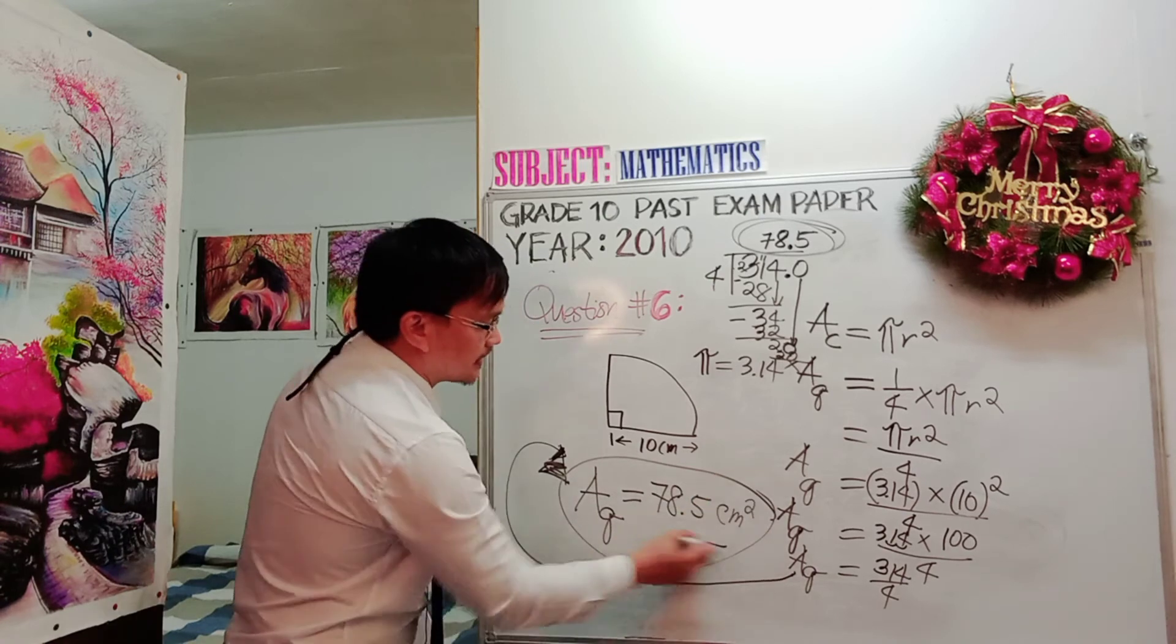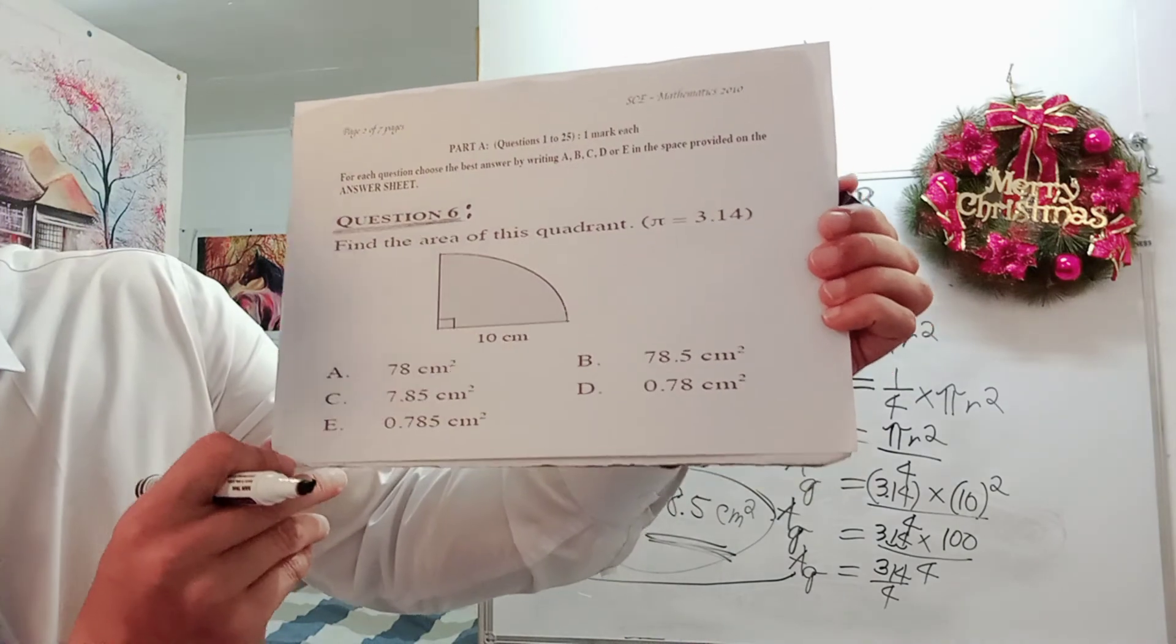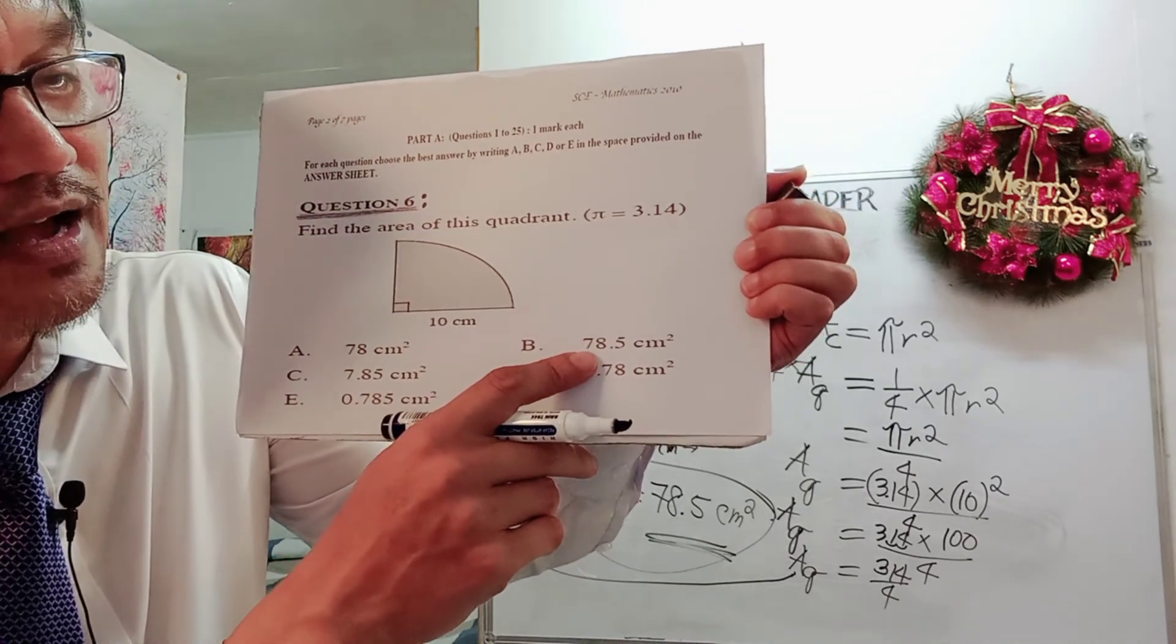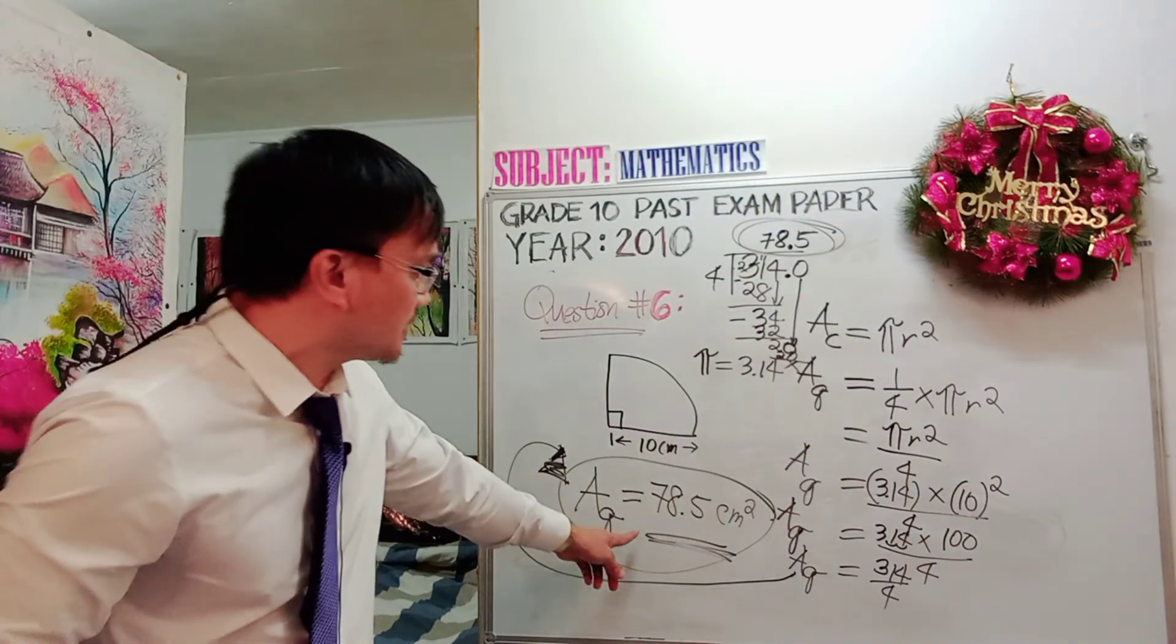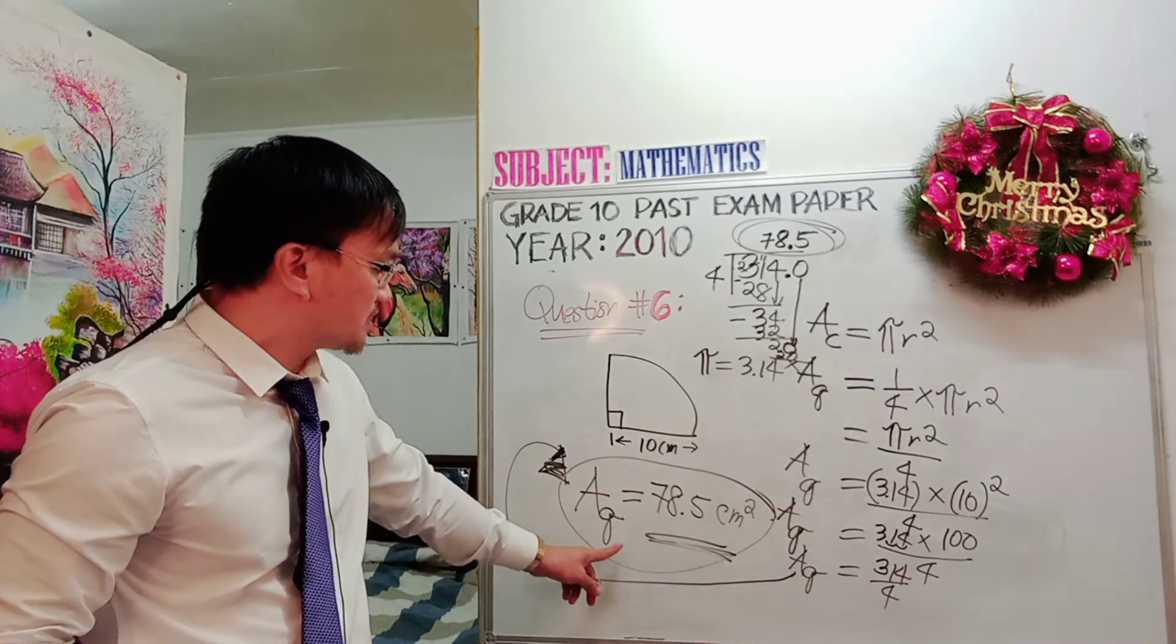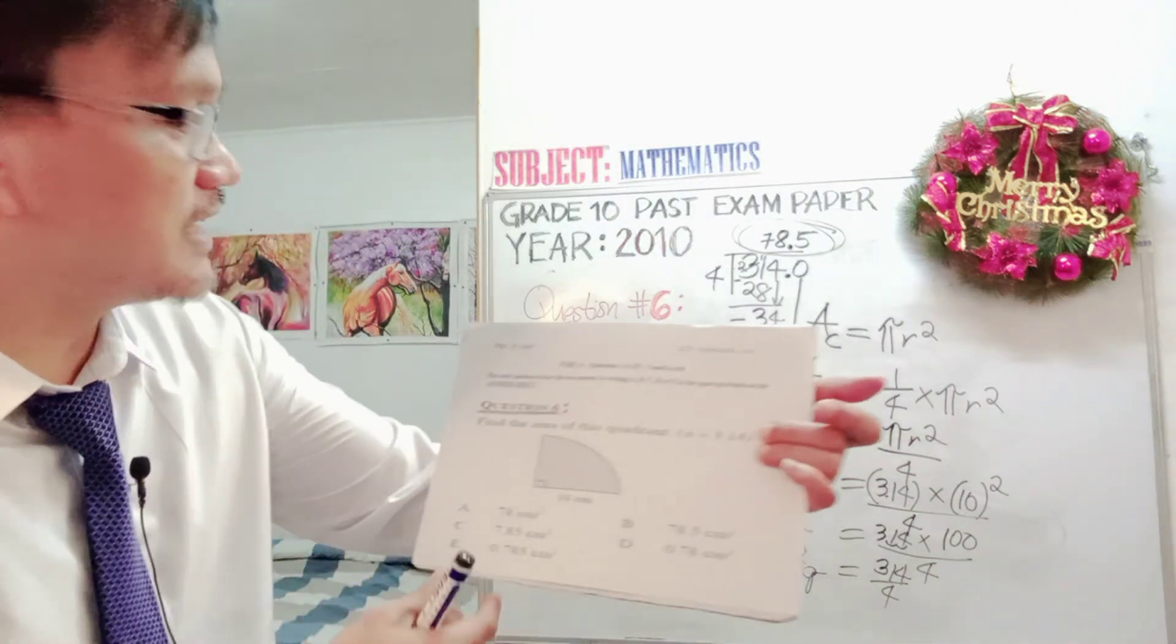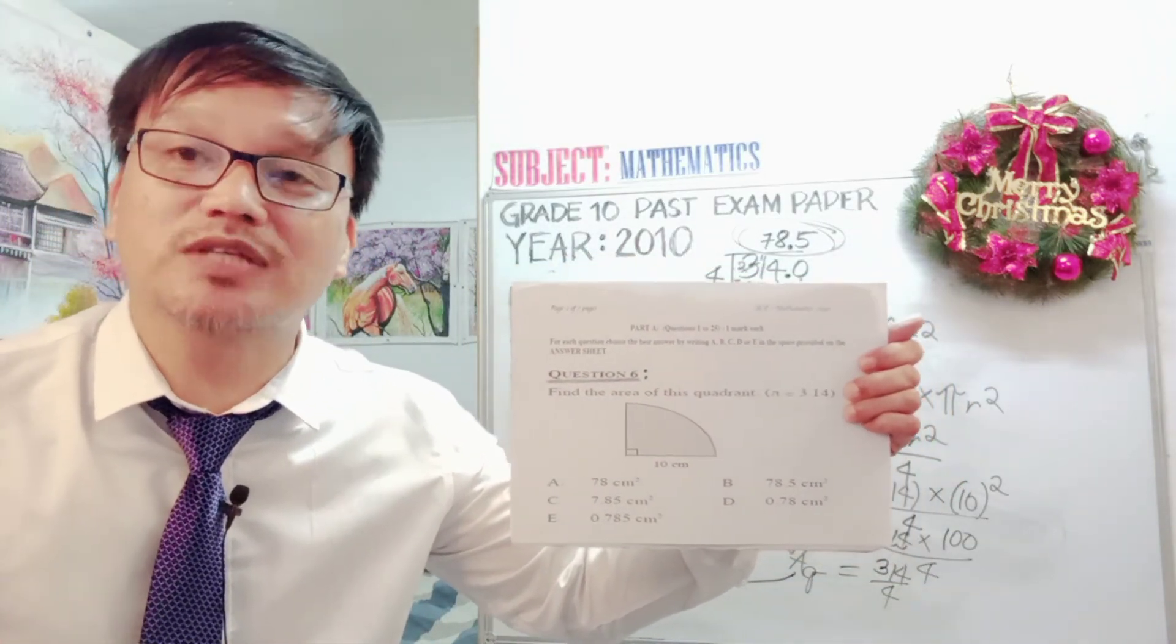Thus, the correct answer is letter B, which is the area is 78.5 square centimeter. The same answer that we got here for our calculation, which is the area of the quadrant is 78.5 square centimeter. So this is question number 6 for mathematics grade 10, past exam paper 2010.